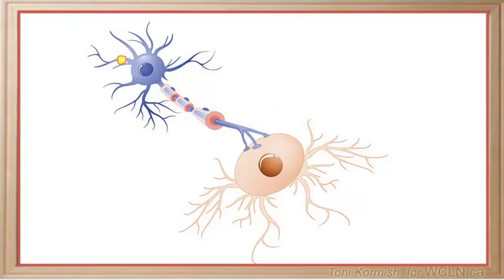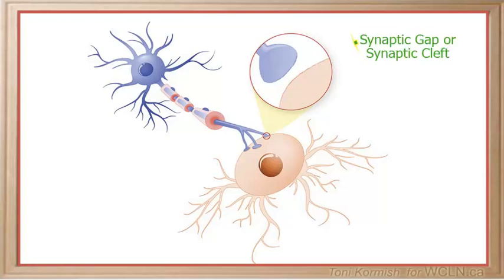Nerve impulses have to travel from one neuron to the next, or from a sensory neuron to an interneuron, or an interneuron to a motor neuron. Neurons do not actually come in contact with one another. Instead, they have a gap referred to as the synaptic gap, or sometimes called the synaptic cleft, that separates the axon of one neuron from the dendrite of the next neuron.